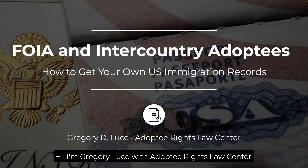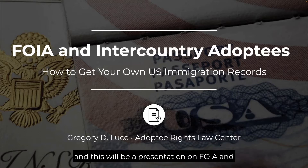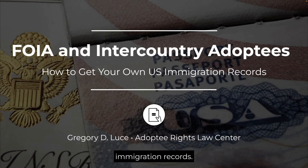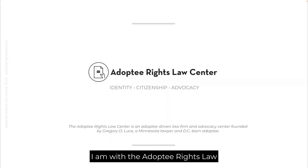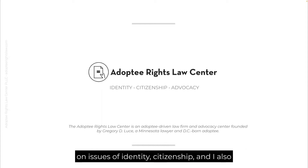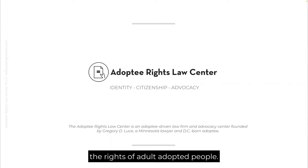Hi, I'm Gregory Luce with Adoptee Rights Law Center, and this will be a presentation on FOIA and inter-country adoptees — how to get your own U.S. immigration records. I represent domestic and inter-country adoptees on issues of identity and citizenship, and I also advocate across the U.S. on issues related to the rights of adult adopted people.